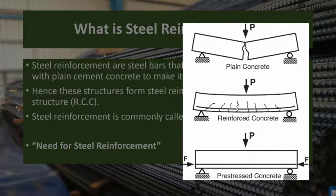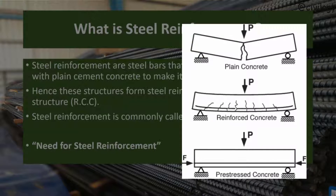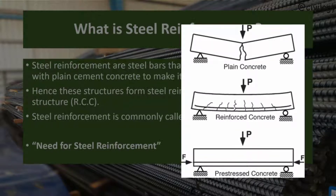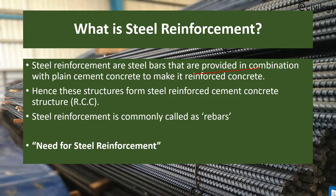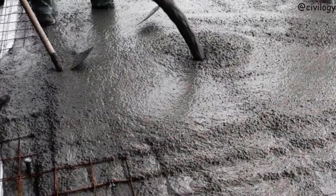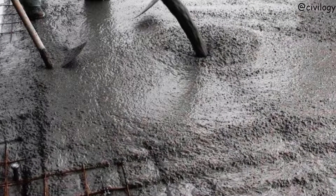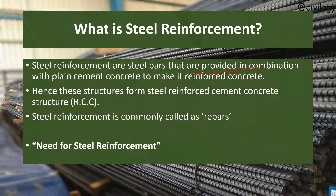The steel reinforcement is strong in both tension and compression. The tensile property provided by the steel reinforcement will prevent and minimize concrete cracks under tensile loads. There is also a question: why is only steel used as reinforcement? Because the coefficient of thermal expansion of steel reinforcement and concrete are similar — they undergo similar expansion during temperature changes. This ensures the concrete is subjected to minimum stress during temperature variations.